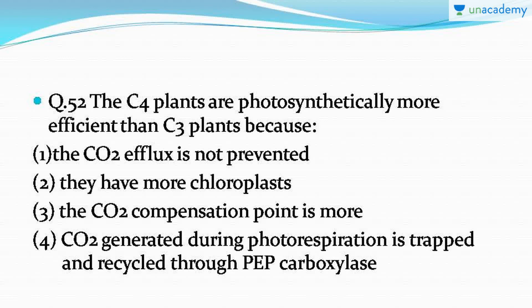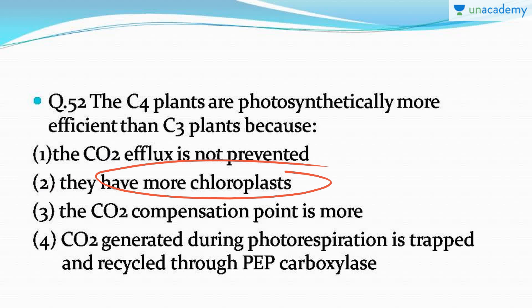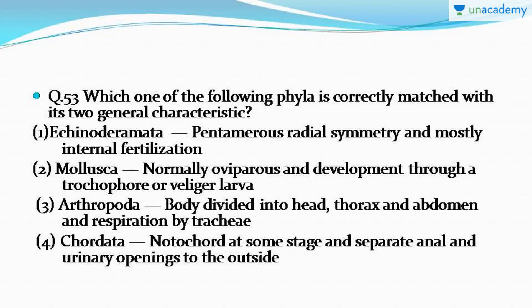Question number 52: C4 plants are photosynthetically more efficient than C3 plants because — this topic is very important, as a question from it appeared in tutorial two as well. The correct answer is option number two: C4 plants are photosynthetically more efficient because they have more chloroplasts than C3 plants.